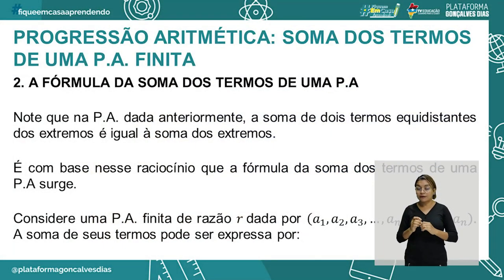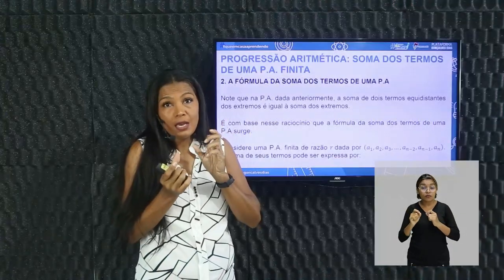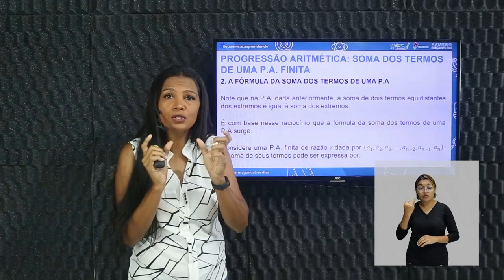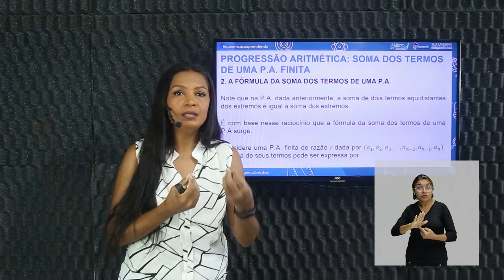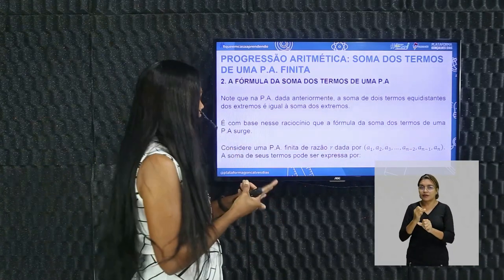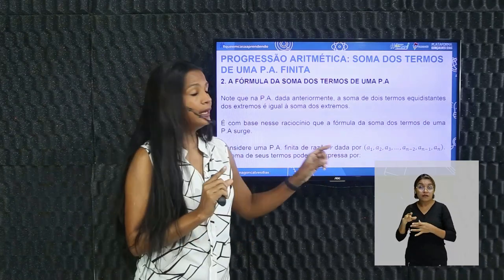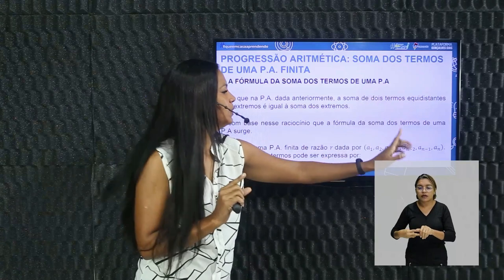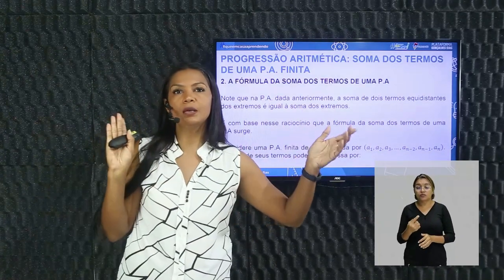Note que na PA a soma de termos equidistantes coincide com a soma dos extremos. Esses conceitos de meios e extremos são muito importantes justamente para o cálculo da soma dos termos. É com esse raciocínio que vou apresentar a dedução mais simples da fórmula da soma dos termos de uma PA. Para isso, preciso ter uma PA finita, com razão R. Uma PA genérica: A1, A2, A3, ... , AN-2, AN-1, AN.